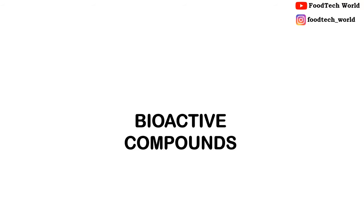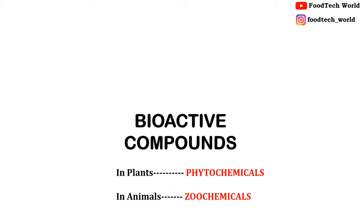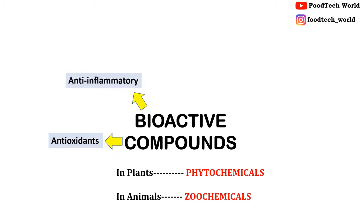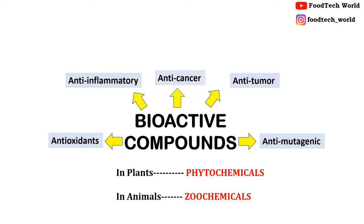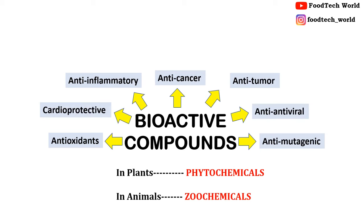Now, what are bioactive compounds? Bioactive compounds are natural compounds. If they are present in plants they are called phytochemicals; if they are present in animals they are called zoochemicals. Bioactive compounds have health-beneficial attributes like anti-cancer, anti-mutagenic, antiviral, antioxidant, anti-tumor, as well as cardioprotective properties. These bioactive compounds have potential uses in the pharmaceutical, food, textile, and cosmetic industries.